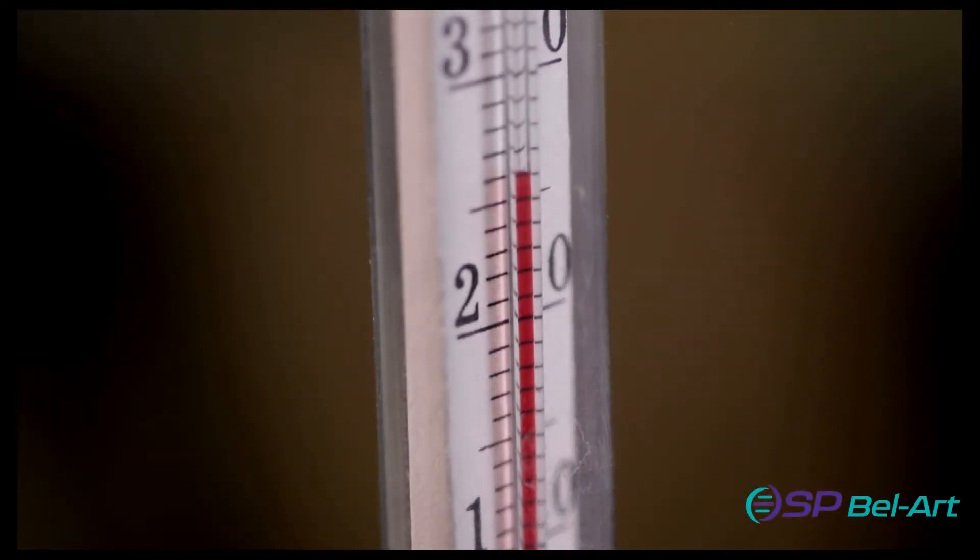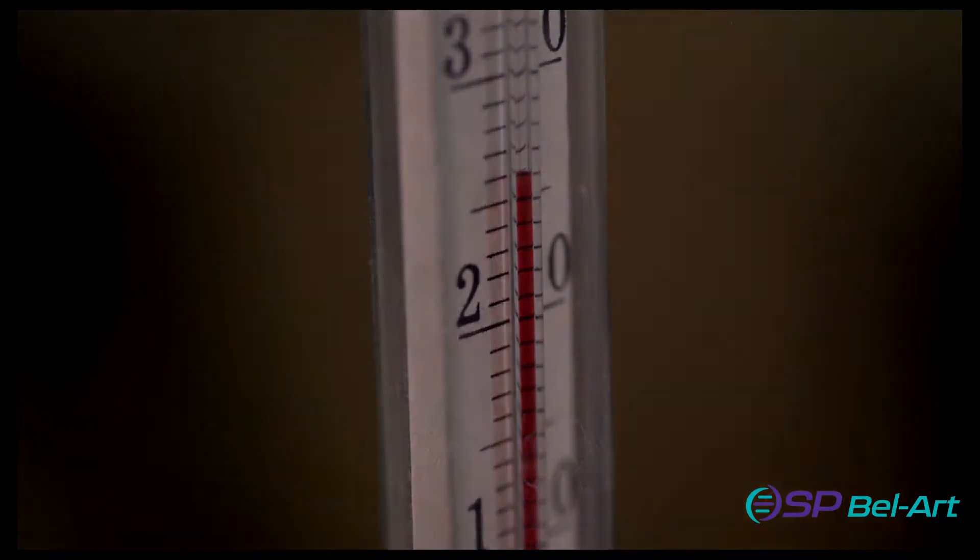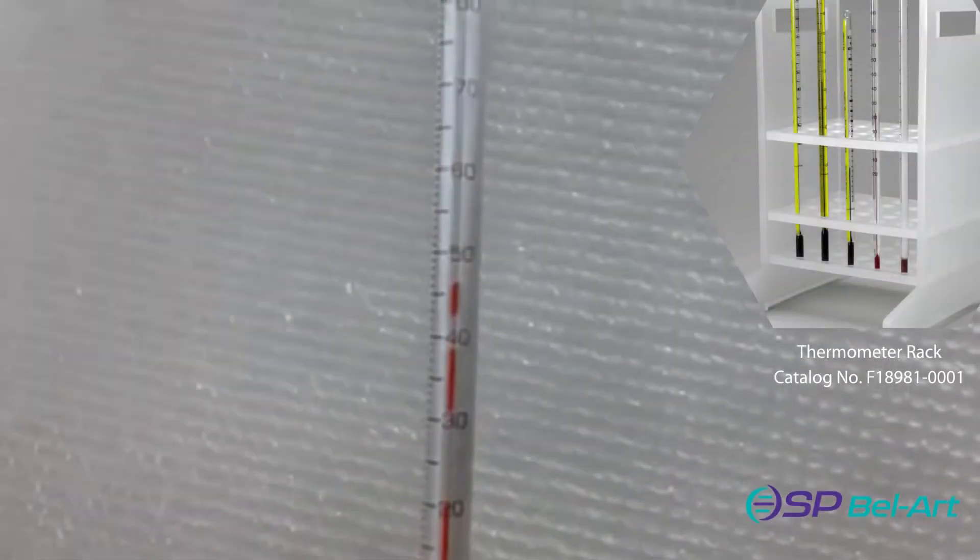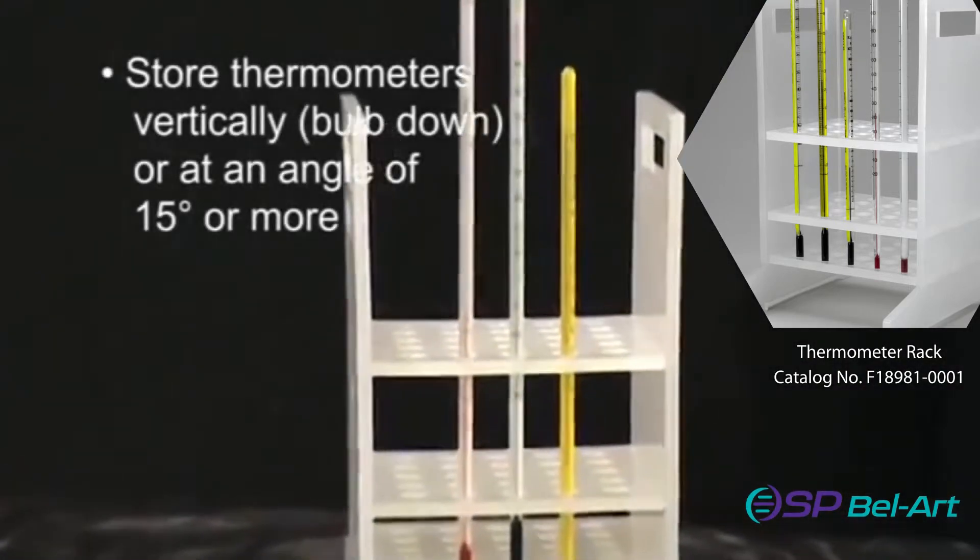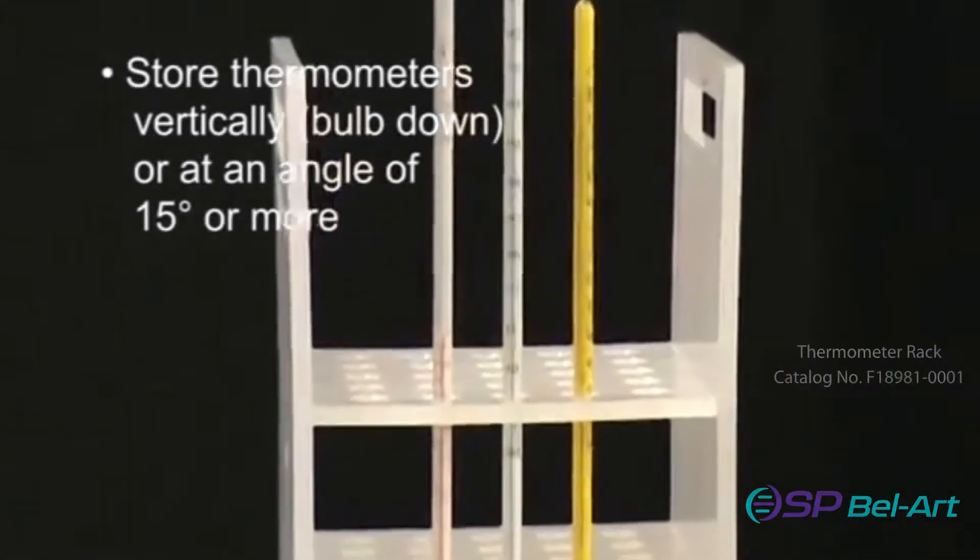Separation in a liquid column can occur in shipping and handling or as a result of horizontal storage. To prevent separation in storage, we recommend you store your thermometers vertically or at an angle of 15 degrees or more.